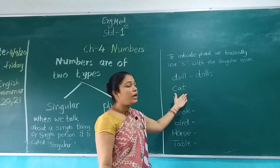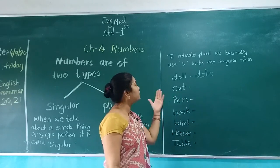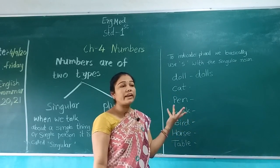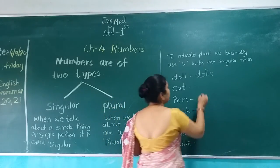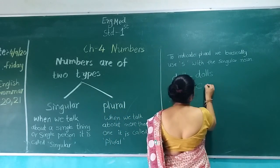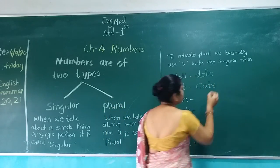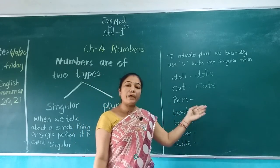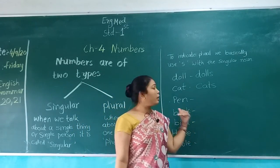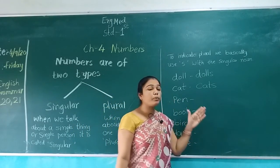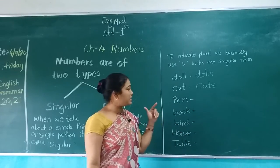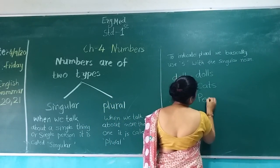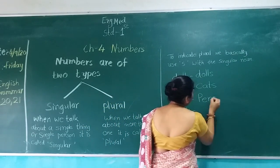C-A-T, Cat. I have to make this plural form. What I will add? S. C-A-T-S, Cats. P-E-N, Pen. I have to make it plural. What I will add? S. P-E-N-S, Pens.